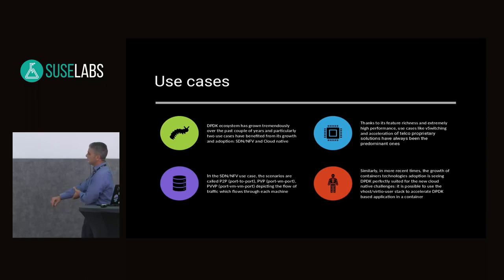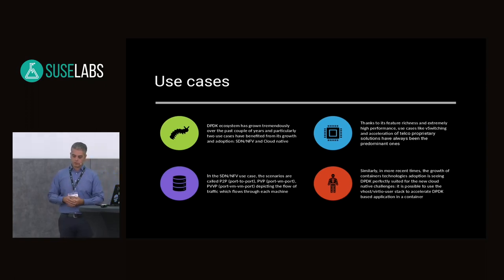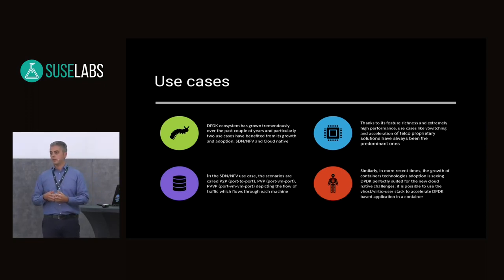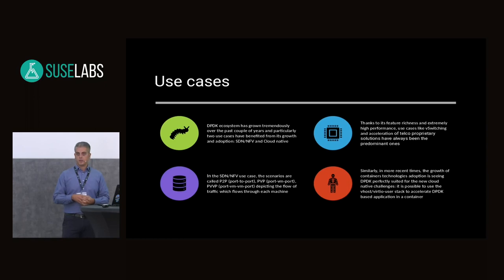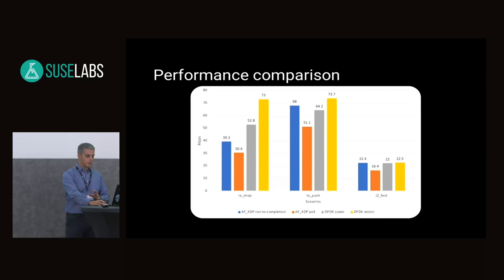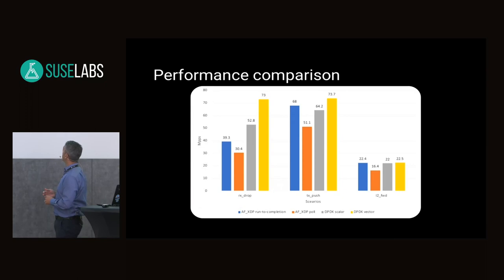One big thing that has happened in the past four or five years: DPDK is the foundation of the two biggest open source virtual switches out there — one is Open vSwitch and the other is VPP. It represents basically the foundation for those projects to accelerate the network in and out of a server.